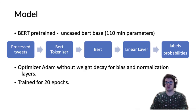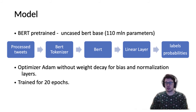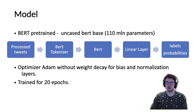Our model used uncased BERT-Base with 110 million parameters. On top, we added a linear layer which classifies the 768-dimensional output from BERT into 3 probabilities, each corresponding to a label. We used the ADAM optimizer without weight decay for bias and normalization layers, setting that coefficient to 0, and trained for 20 epochs.